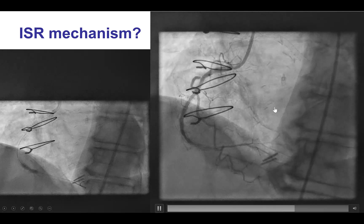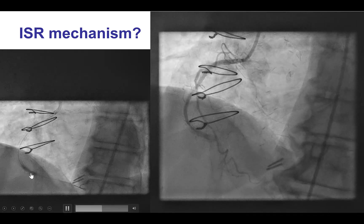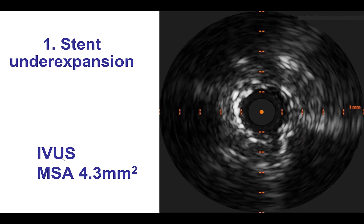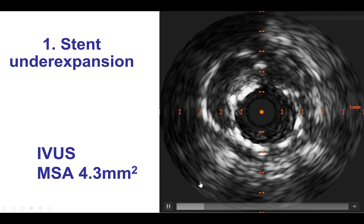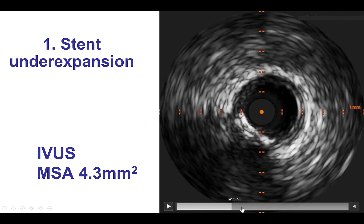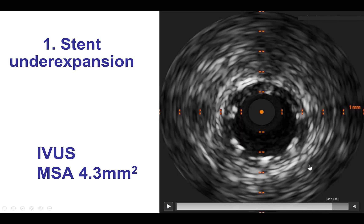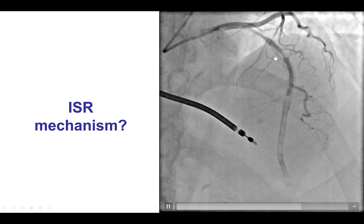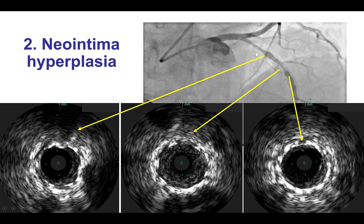This is an example of a patient with in-stent restenosis. There is a waist in the balloon. This is an example of stent under-expansion with a minimum in-stent area of 4.3 mm², whereas more proximally the vessel is much bigger at more than 7 mm². This is another patient with occlusive in-stent restenosis, where intravascular ultrasound shows the mechanism is tissue formation inside the previous stent — the second category of neointima hyperplasia or neoatherosclerosis.